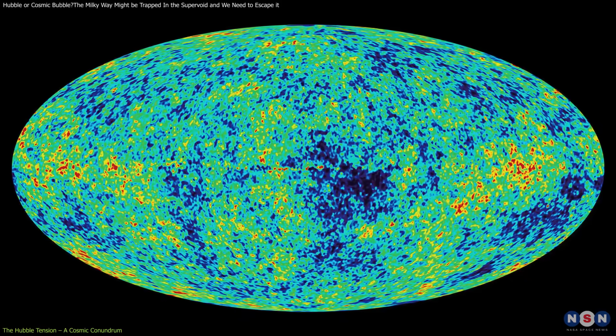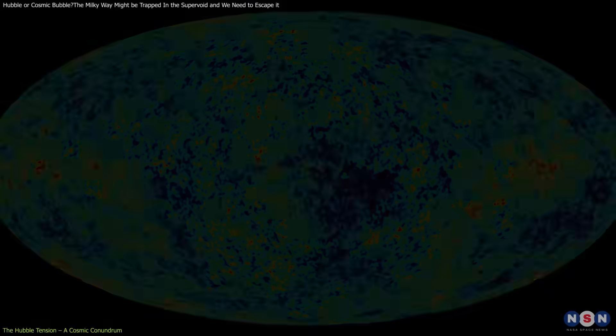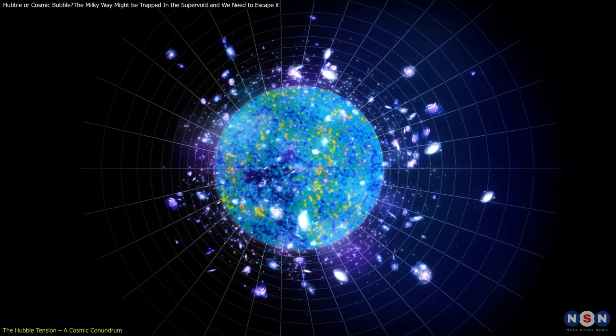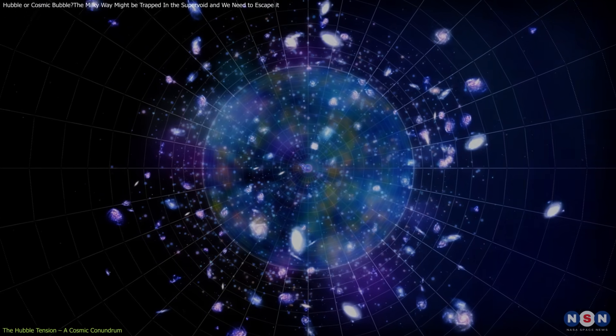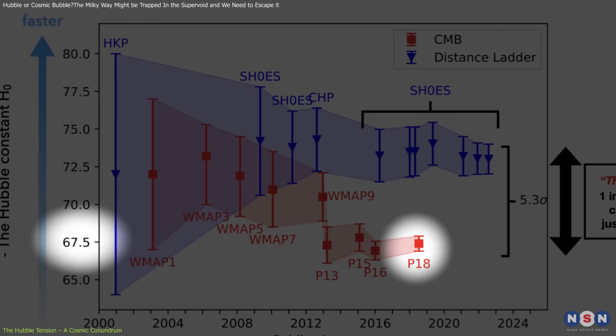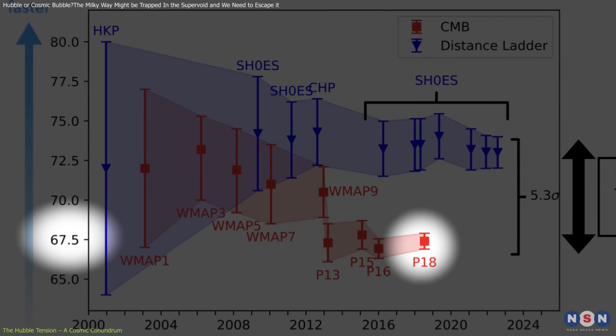The first method uses the cosmic microwave background, the afterglow of the Big Bang. By analyzing this ancient light and applying the lambda-cold dark matter model, scientists estimate a Hubble constant of about 67.4 kilometers per second per megaparsec.